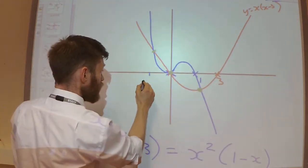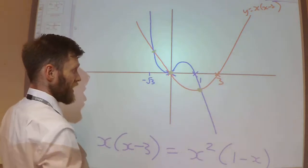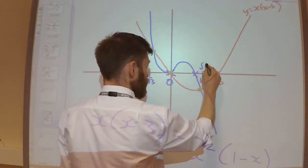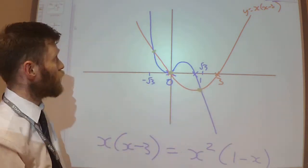So I've got three solutions. I've got -√3, it could be that coordinate there. I've got 0 here. And I've got √3 here. So these are the three x coordinates.